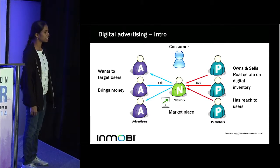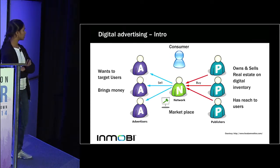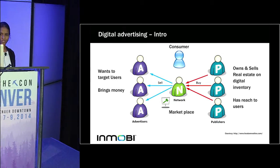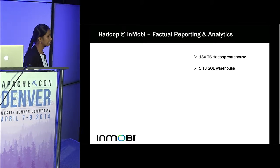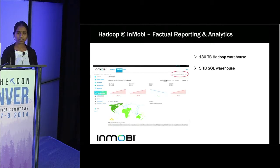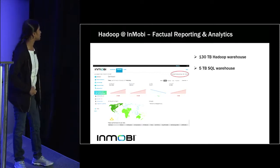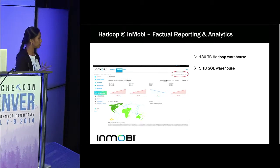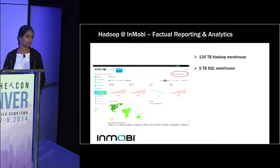Inmobi buys inventory from publishers and has a marketplace where publishers come and register, and then it sells that to advertisers. In this process it acquires the end consumer — the user — and it wants to understand the user and show them proper ads. With respect to analytics, we have a 130 TB Hadoop warehouse and a 5 TB SQL warehouse. This is what a publisher sees on his dashboard: how he's performing today versus yesterday, how many ad requests are served on his page, fill rate compared to yesterday, and how ad requests are served across regions.